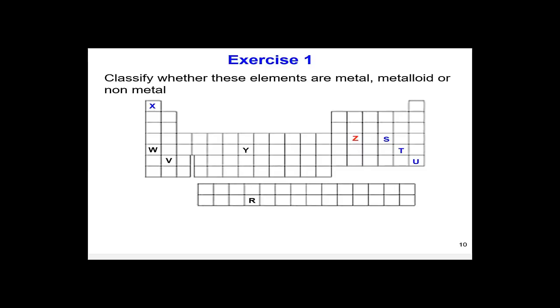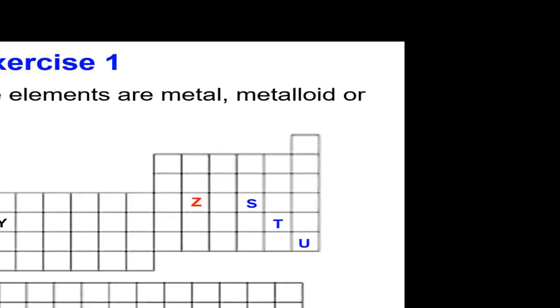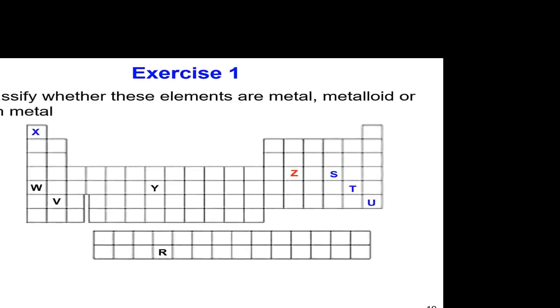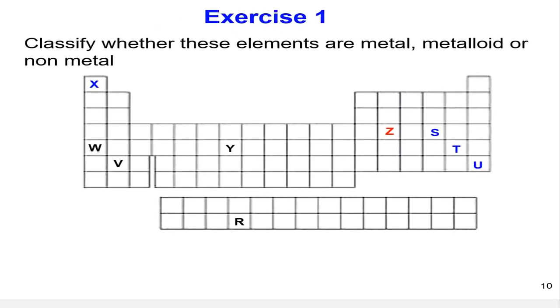Based on the location of X, S, T, and U, where X is obviously the hydrogen, and S, T, and U are located on the right of the periodic table, X, S, T, and U are nonmetals.